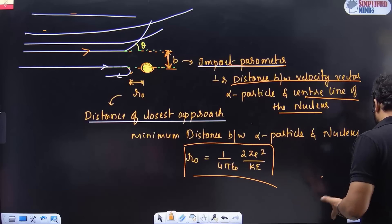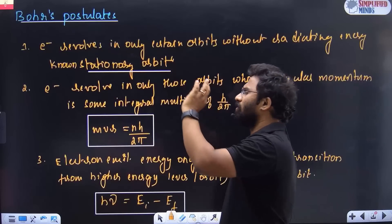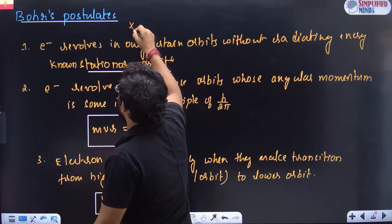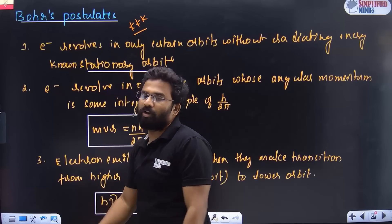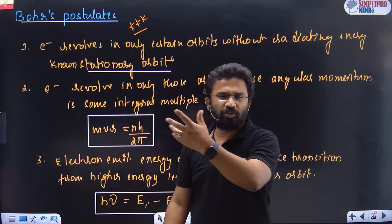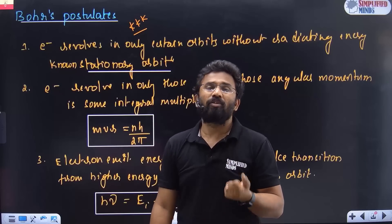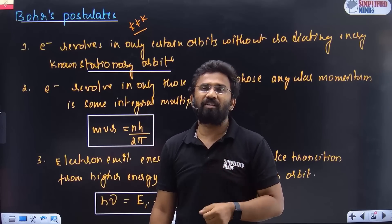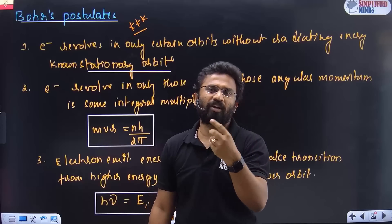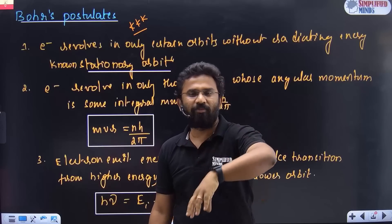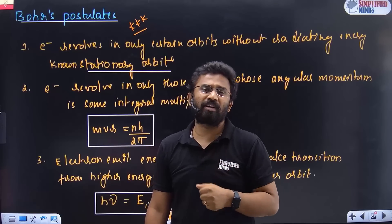Now the most important topic: Bohr's postulates. There were issues with Rutherford's model — he could not explain the stability of the atom. He said the electron is revolving and losing energy, so it would spiral and fall into the nucleus. He tried to compare it to the universe where Earth rotates around the Sun, but planetary motion involves uncharged bodies, whereas electrons are charged — so there was a problem with the Rutherford model.